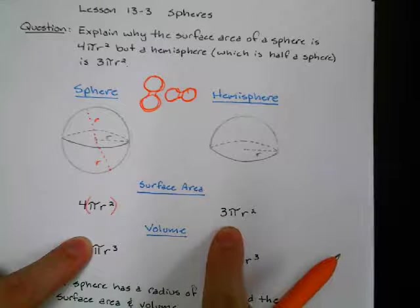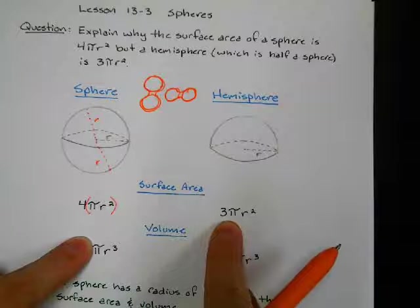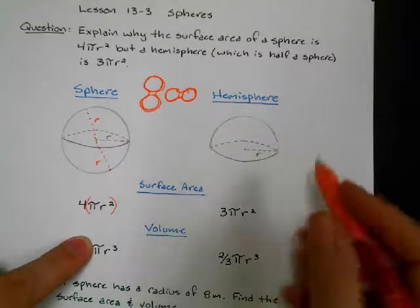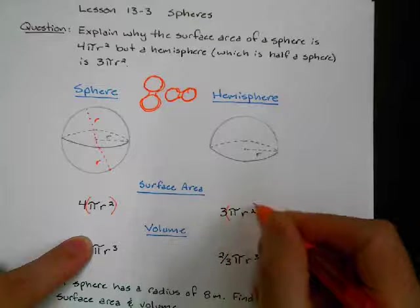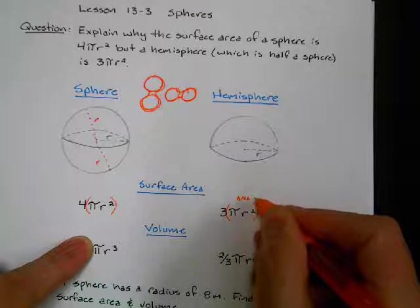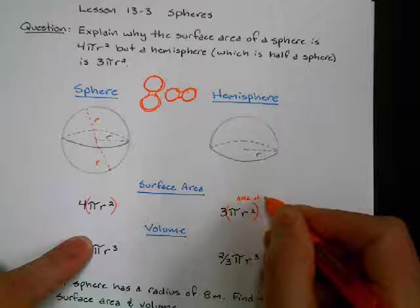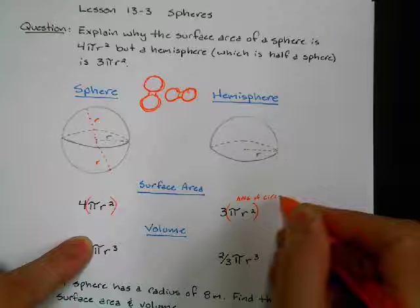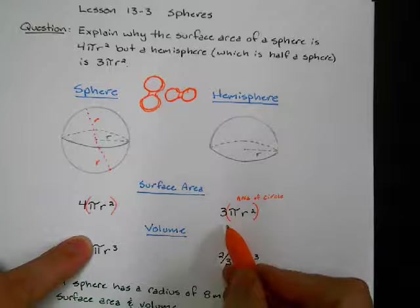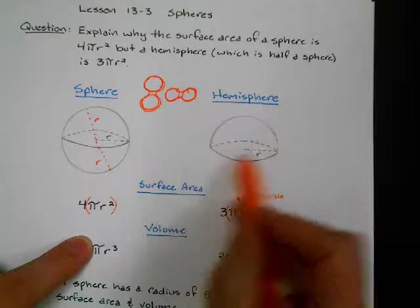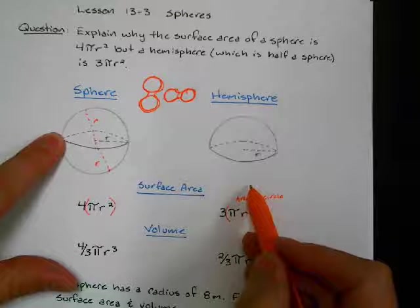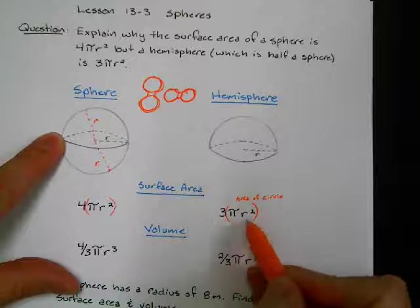Now the hemisphere has three areas of a circle. Here's the area of a circle. Why is it three, and why is it not two? Because a hemisphere is half of a sphere. Why does it have three and not two circles?